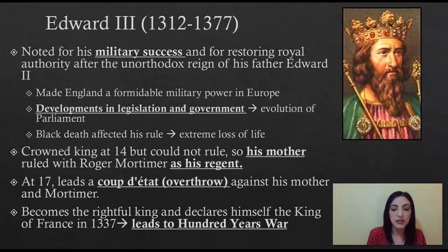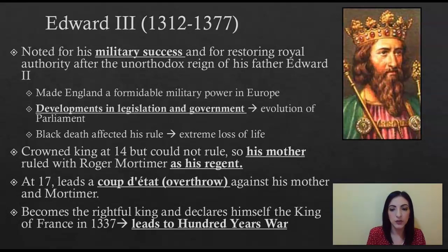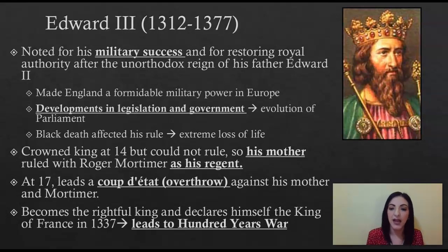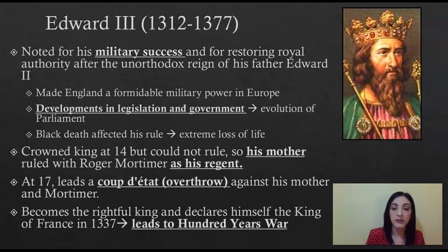Edward III becomes rightful king and declares himself also king of France. His mother Isabella was a princess of France, and her father's male children did not survive into adulthood. So when Philip IV dies with no legitimate male heir close to the throne, Edward — being the son of a former French princess — feels it is his claim to also be king of France. His grandfather was king of France, making him the closest male relative in line. This actually sparks the Hundred Years' War, as the kings of England claim succession over the kingdom of France for the next hundred years or so.